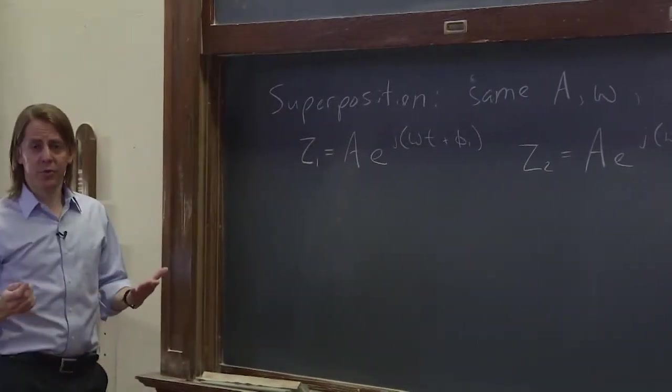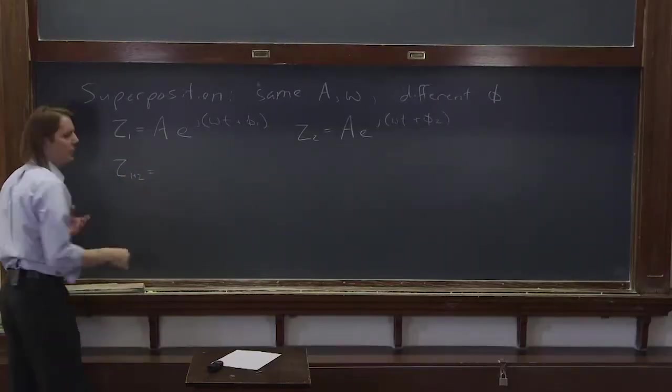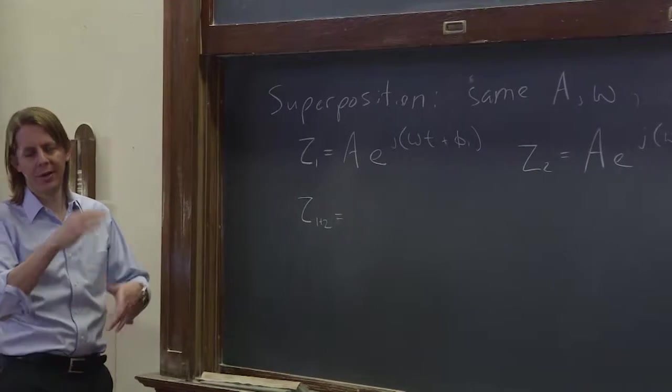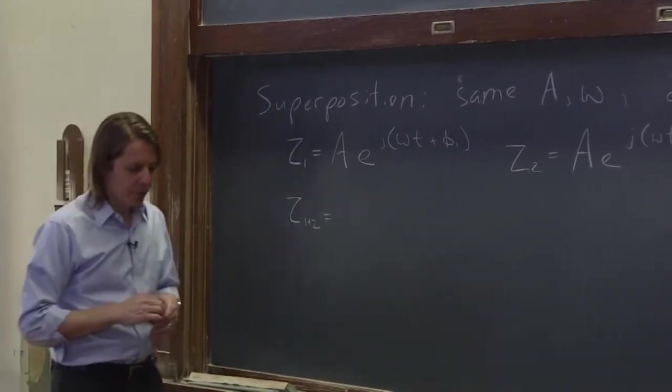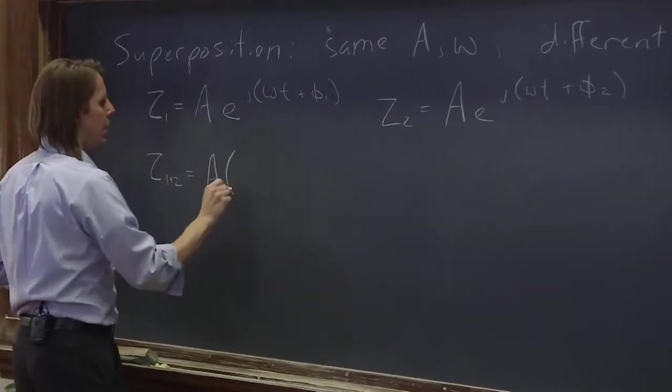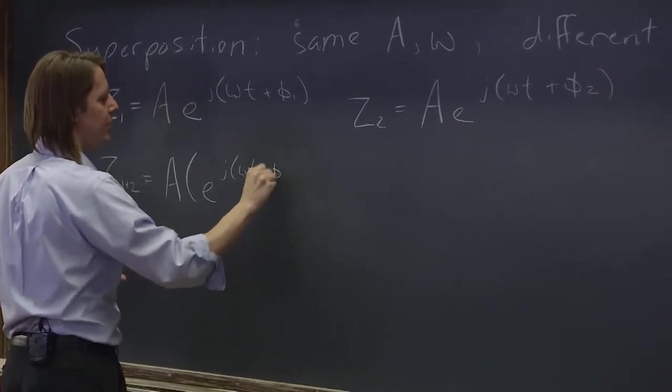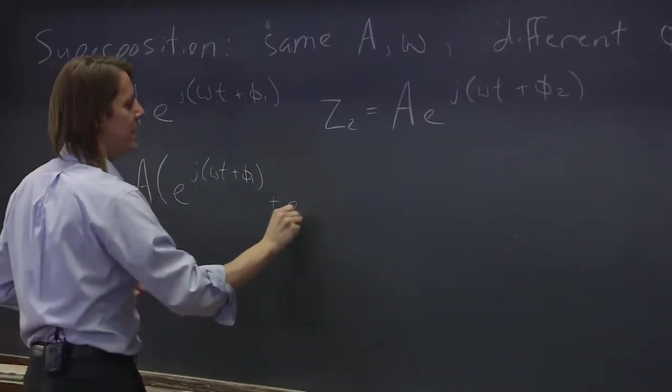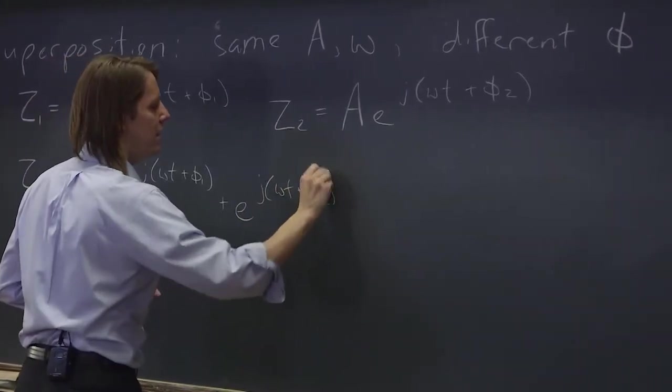So z1 plus z2, you just add them. If this were some physical situation where we were going to add those, like different initial conditions, whatever it might be, they would just go together. So you could pull out a common factor A, and you would have e^(jωt+φ1) + e^(jωt+φ2).